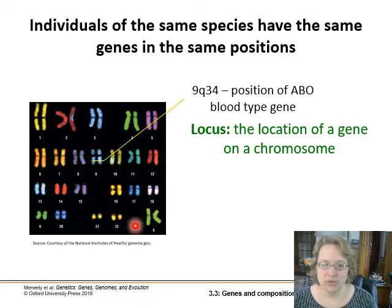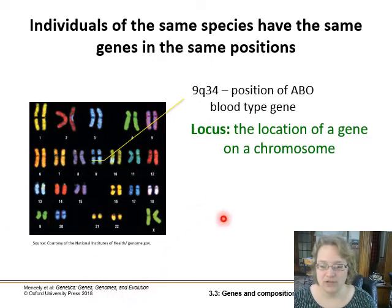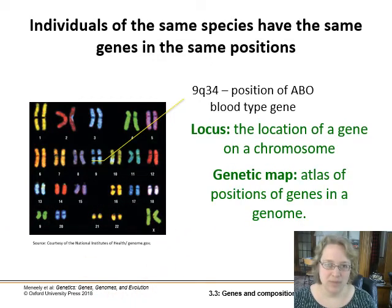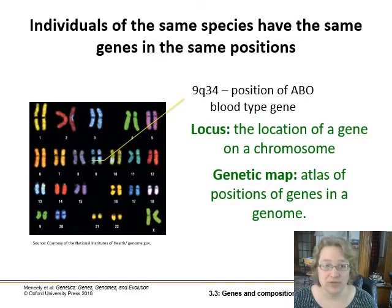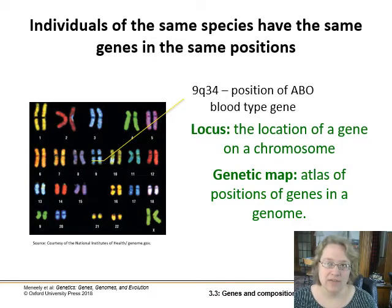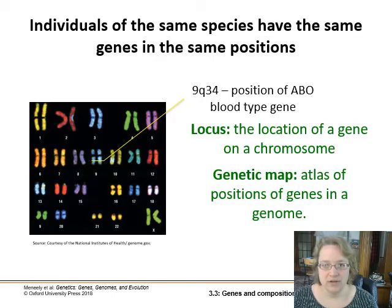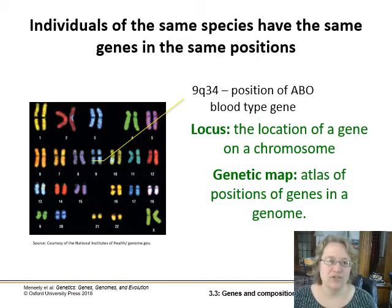When we determine what all of these genes are and find out where they are in relation to each other, or their exact location on the chromosome, that's referred to as a genetic map — sort of being an atlas of positions. If you give someone directions to your house, you can give them the exact GPS coordinates, or a street address, or relational directions like turning at the school down Euclid, left on Comstock, right at the large tree. That's also a kind of map, but in a relational way.